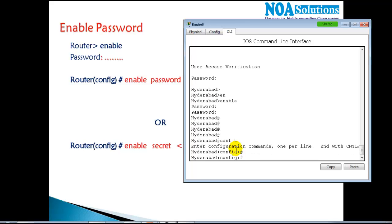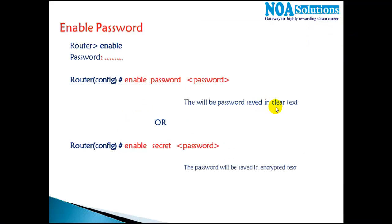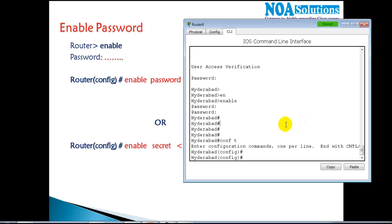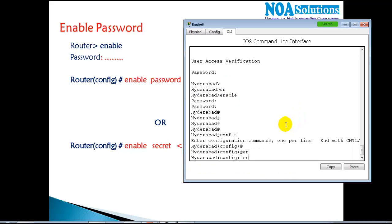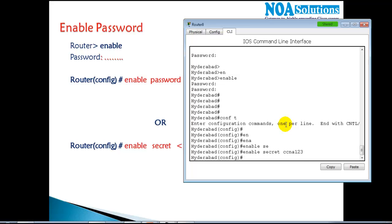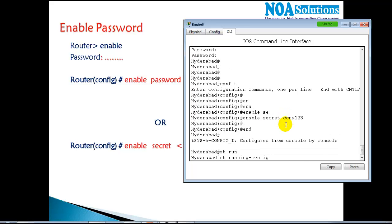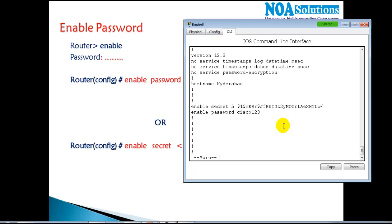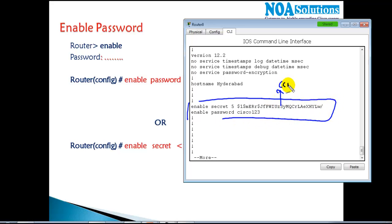The major drawback of 'enable password' is that it stores the password in clear text. To demonstrate the difference, I set 'enable secret ccna123' and run 'show running-config'. You can see the enable secret password is completely encrypted in the running configuration, whereas enable password would be visible in plain text.